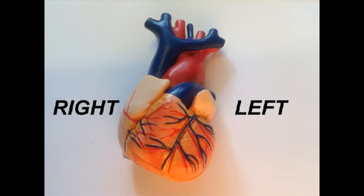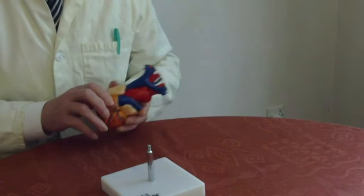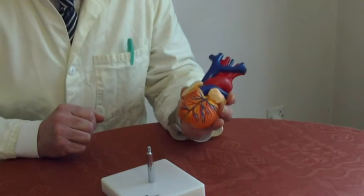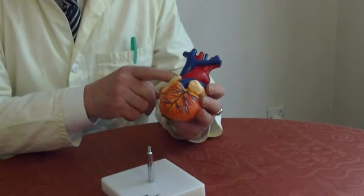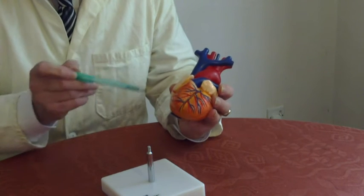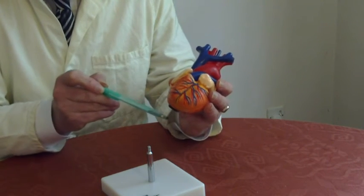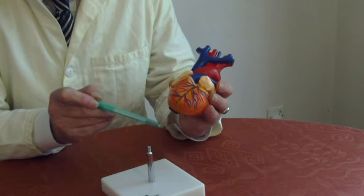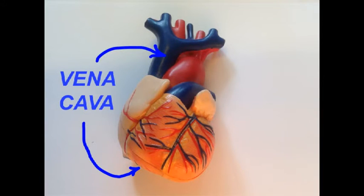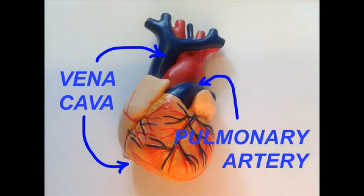Blood enters the right side of the heart through the vena cava — the superior vena cava and the inferior vena cava. This deoxygenated blood has its pressure increased by the heart, and it leaves through the pulmonary artery and goes to the lungs.